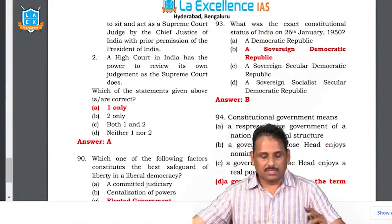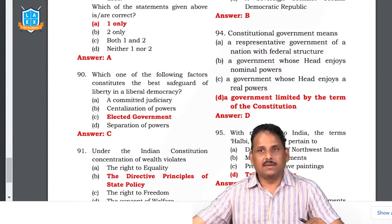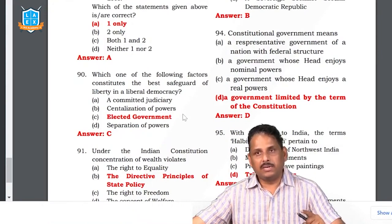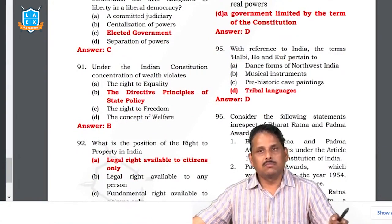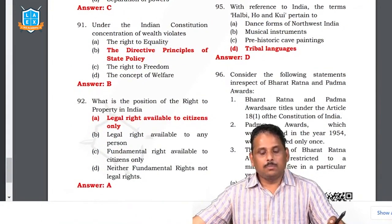Question 90: which factor constitutes the best safeguard of liberty in a liberal democracy? Both separation of powers and elected government are safeguards — but between these two I will take the elected government. There is no safeguard better than the mind of the people. Question 91: under the Indian Constitution, concentration of wealth violates DPSP Articles 39B and 39C — if you go through their socialistic principles you can answer this question.